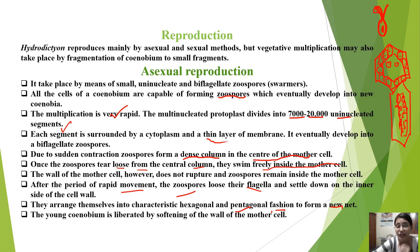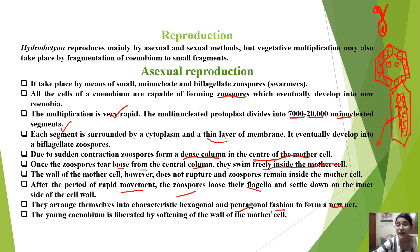A young coenobium is formed inside the mother cell. The young coenobium is completely released when the mother cell wall softens and ruptures. This completes the asexual reproduction process.